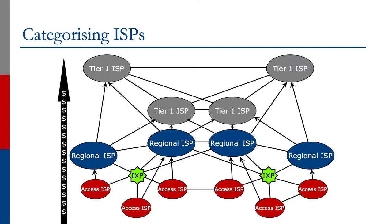Looking at the diagram, we have categorized ISPs. We have the access providers which are providing access to the end user. We have the regional ISP which is covering several countries or regional networks. And then we have the tier 1s which are providing global connectivity. They interconnect with each other depending on business or operational needs.